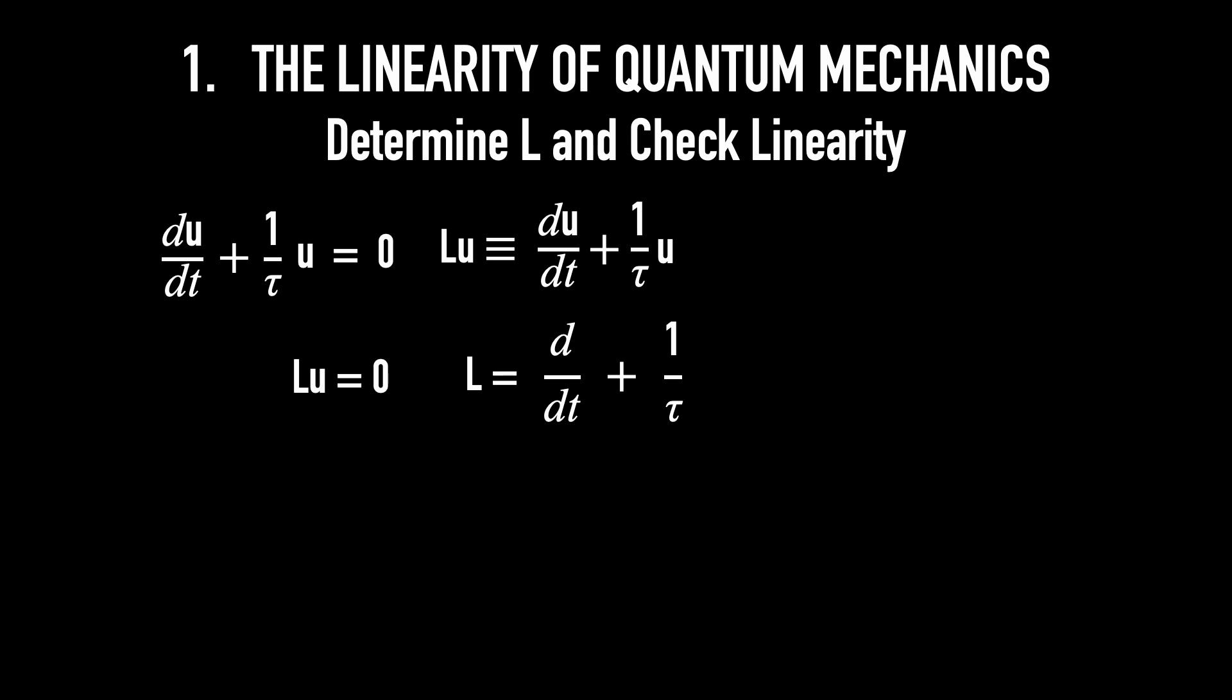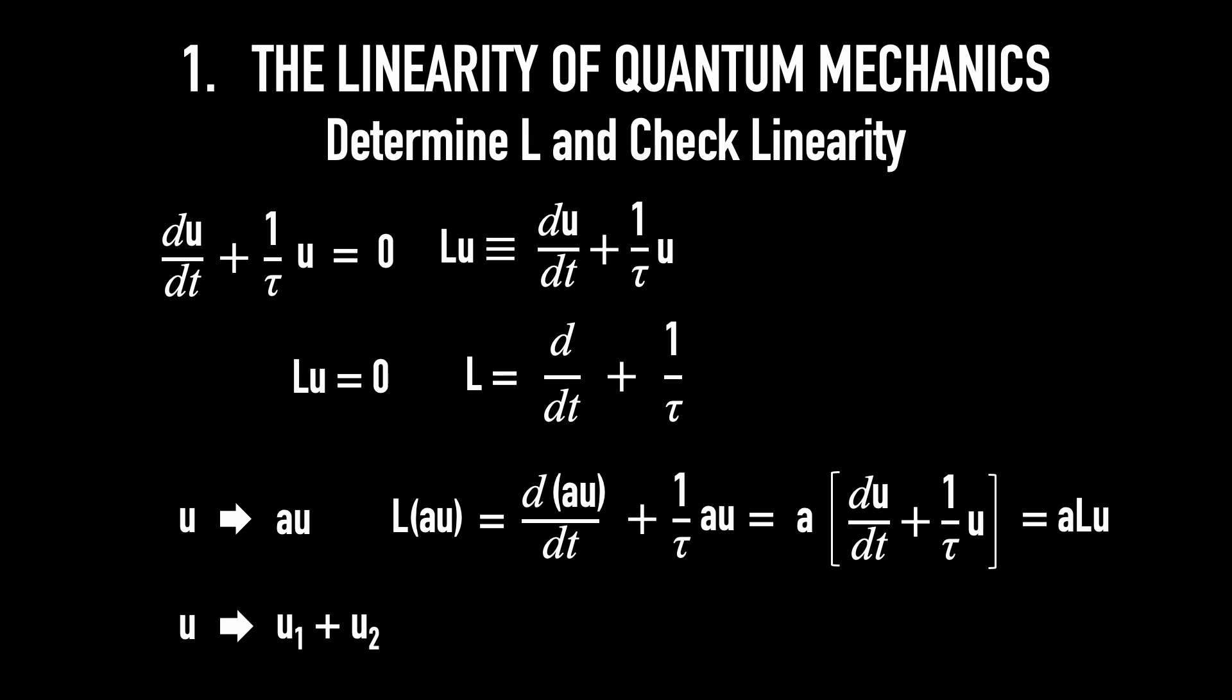To verify that L has linearity, you first replace U with AU. We get L on AU would be d dt of AU plus 1 over tau AU, which is A times dU over dt plus 1 over tau U, which is ALU. Then, if you replace U with U1 plus U2, similarly, you will also get L on U1 plus U2 is equal to LU1 plus LU2. L has both scaling and additivity properties, so it is linear.